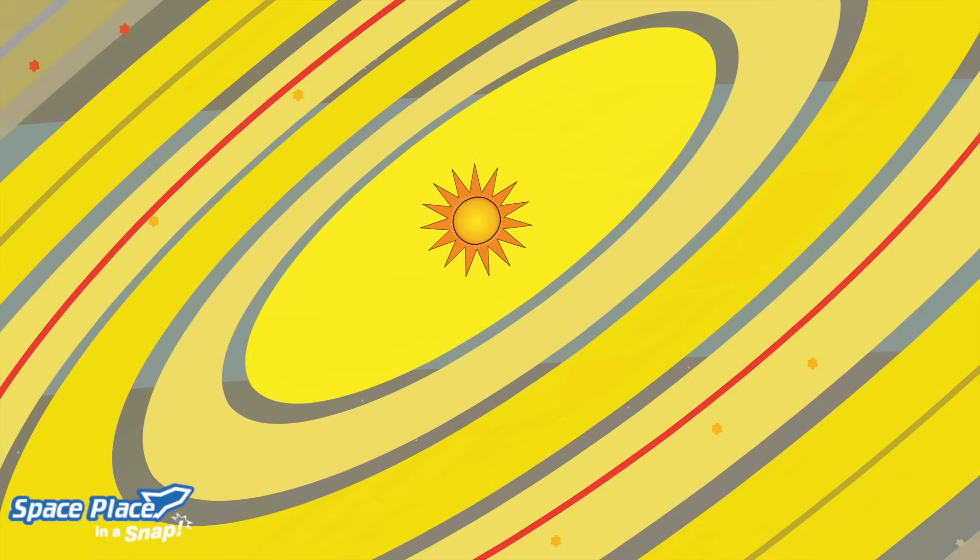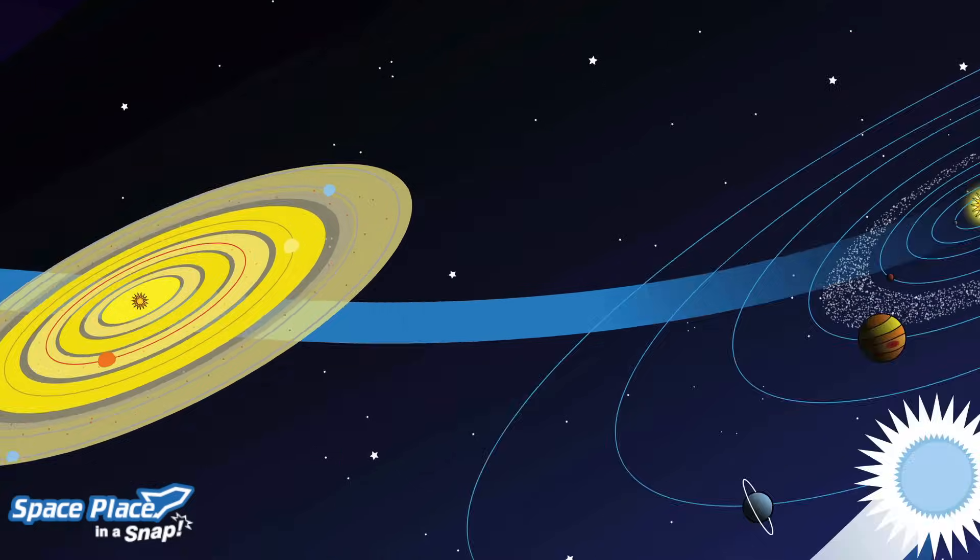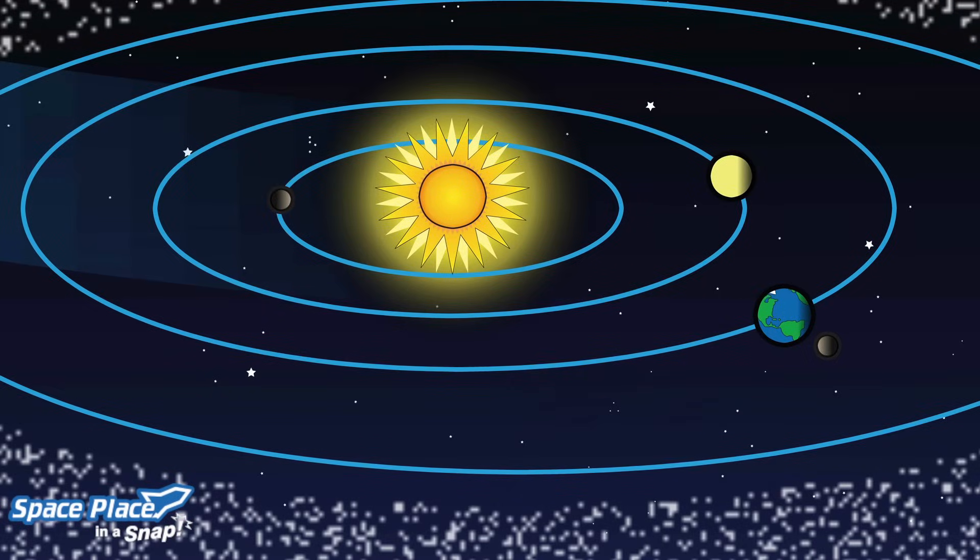Rocky planets like Earth formed near the sun because icy and gaseous material couldn't survive close to all that heat. Gas and icy stuff collected further away, creating the gas and ice giants. And like that, the solar system as we know it today was formed.